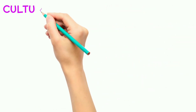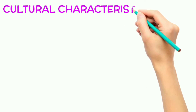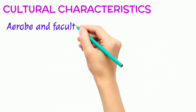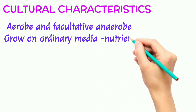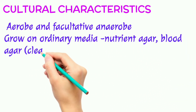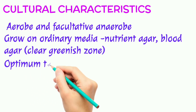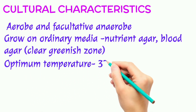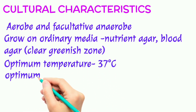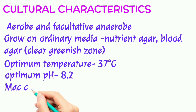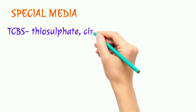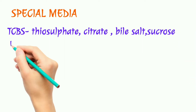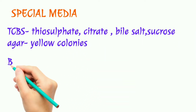It is highly motile. Let's start its cultural characteristics. It is an aerobic and facultative anaerobic bacteria. It grows on ordinary media like nutrient agar and blood agar, showing a clear greenish zone. The optimum temperature requirement is 37 degrees Celsius and the optimum pH is 8.2. On special media TCBS — thiosulfate citrate bile salt sucrose agar — it shows yellow colonies.